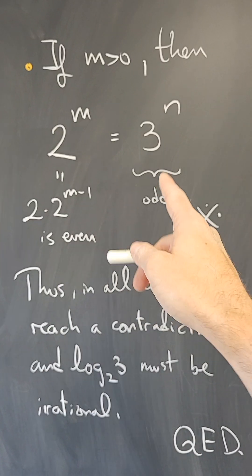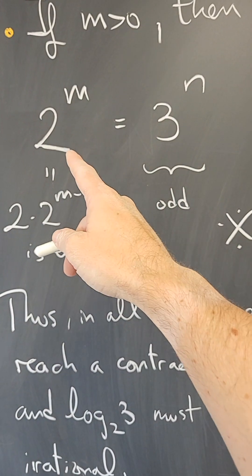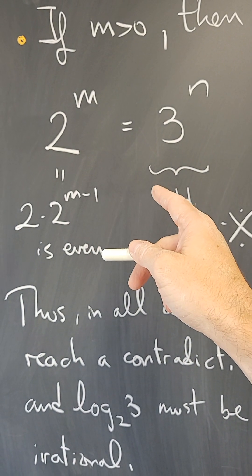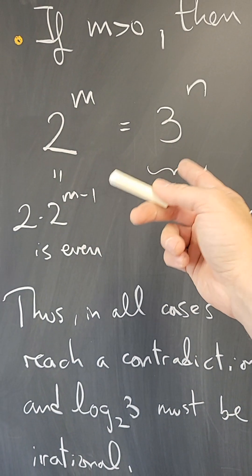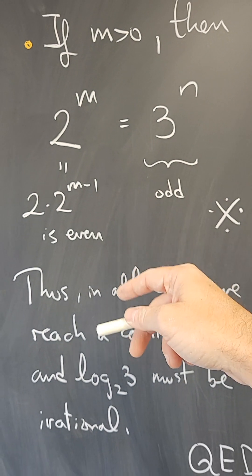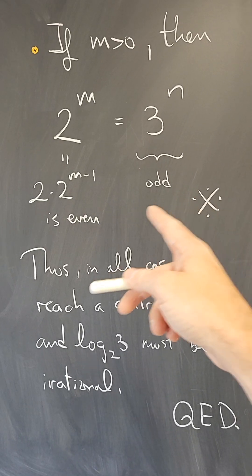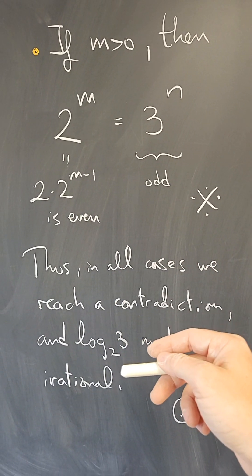This last part can also be argued using the fundamental theorem of arithmetic – the uniqueness of prime factorizations means these would be two different factorizations, which is nonsense. But the fundamental theorem of arithmetic is a big cannon to kill this fly, so you can just use the even-odd argument.